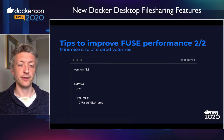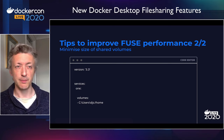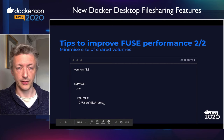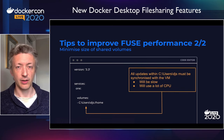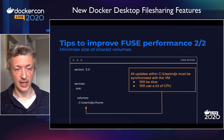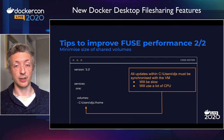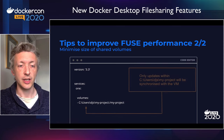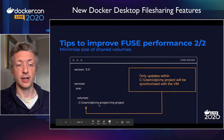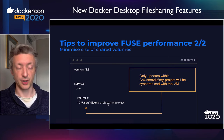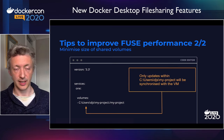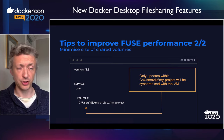Tip number two: if you have things you do want to share, try to minimize the size of them. Here I've made a deliberate mistake, which is to share my entire home directory with a container. The problem is that all updates inside my home directory, even those unrelated to my application, will be synchronized with the VM — it will be very slow and use a lot of CPU. So be specific and share exactly what you need, like the project directory. That means only updates within the project directory will be shipped into the VM. Those two tips are valid for both Mac and Windows.